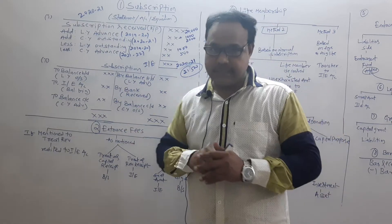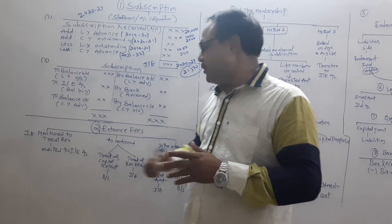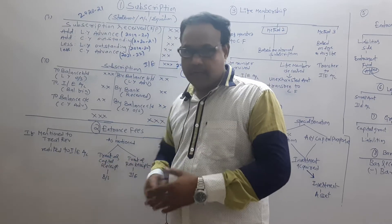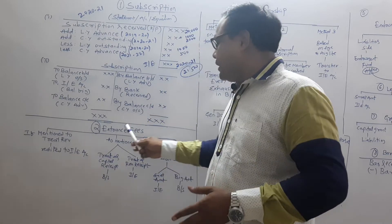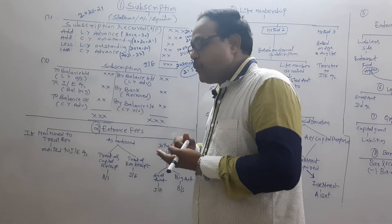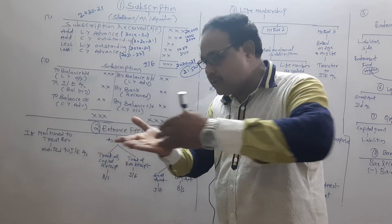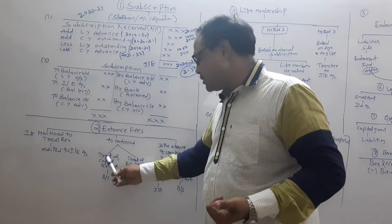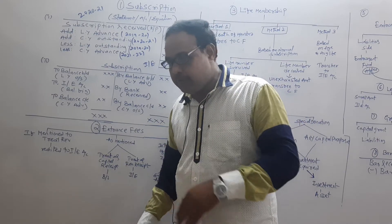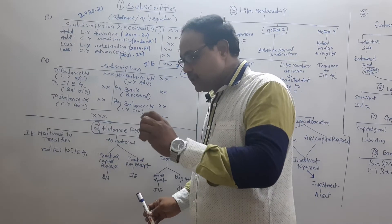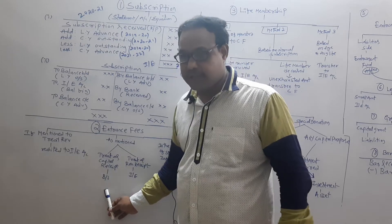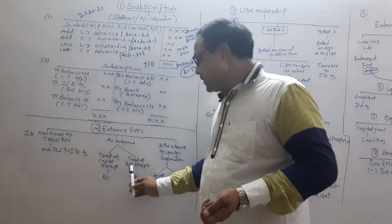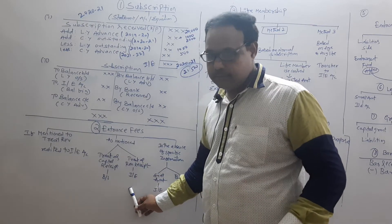Regarding entrance fees: if the problem mentions to treat it as revenue, credit it to the income and expenditure account. If mentioned as partly capital and partly revenue, treat accordingly — for example, 60% capital goes to the balance sheet and 40% revenue goes to the income and expenditure account.